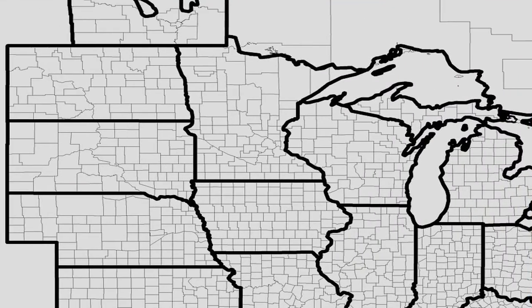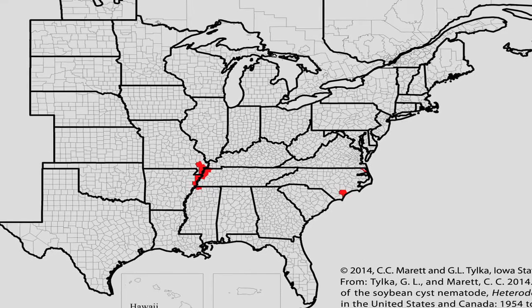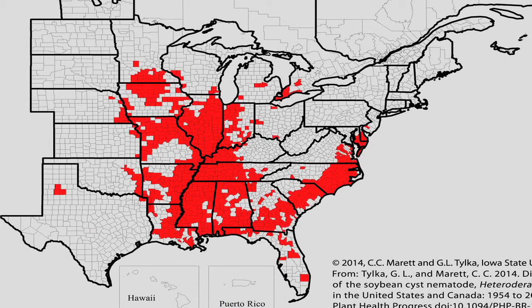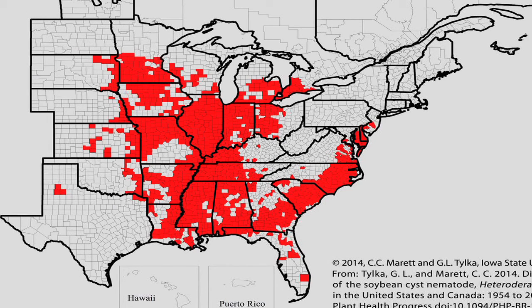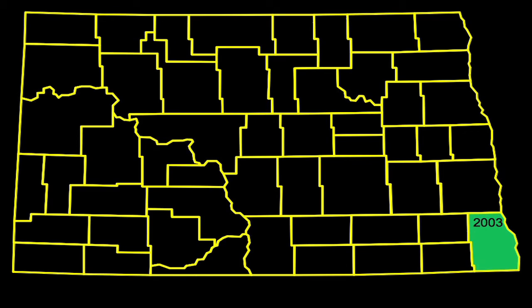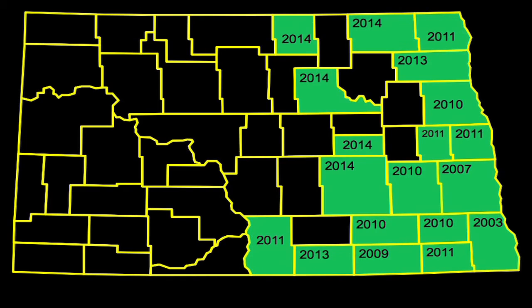Although this pathogen is relatively new to northern Minnesota and North Dakota, it was first found in the United States in 1954 in North Carolina. Over the next half century, it spread throughout the entire soybean growing region of the U.S., and by 2003 it was first found in North Dakota. Over the next decade, SCN spread from Richland County north to the Canadian border and west to the Missouri River, and by 2014 SCN was confirmed in 19 North Dakota counties.